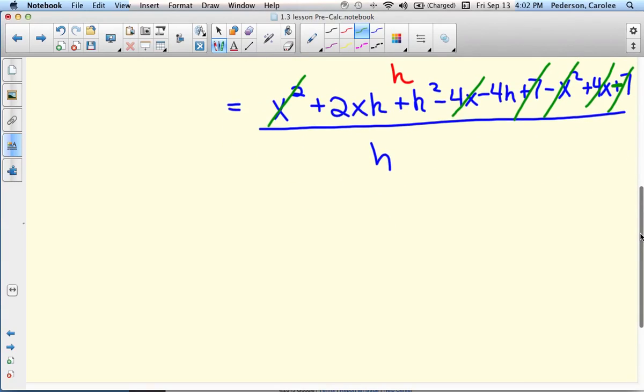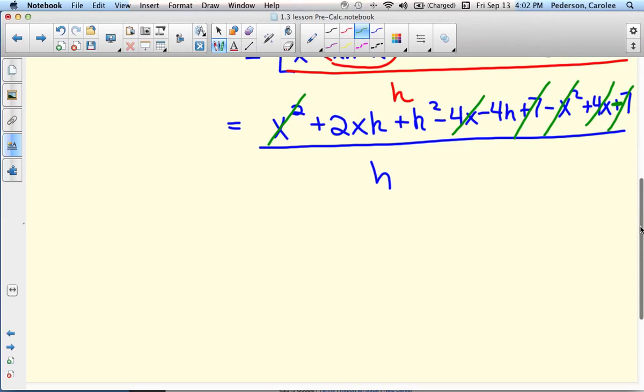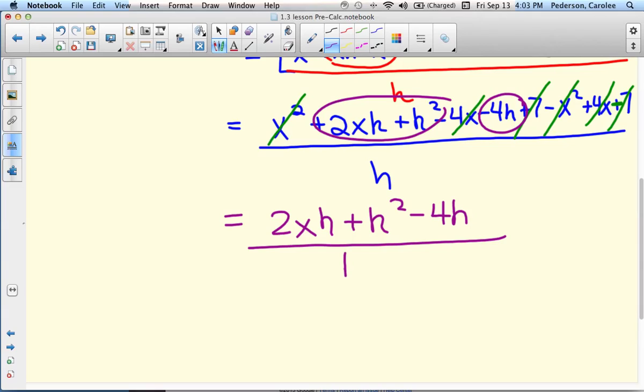So what I'm left with is, if I circle this in purple, just these two pieces and then the denominator. So 2xh plus h squared, minus 4h, all over h.